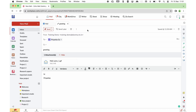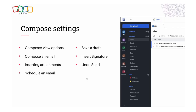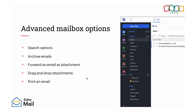So we covered how to insert signatures, insert attachments, compose an email, Send Later and Send Right Now, and how to use Undo Send. The next topic is Advanced Mailbox Options, under which we will cover Search Options, Archive Emails, Forward an Email as Attachment, Drag and Drop Attachments, and Print an Email.